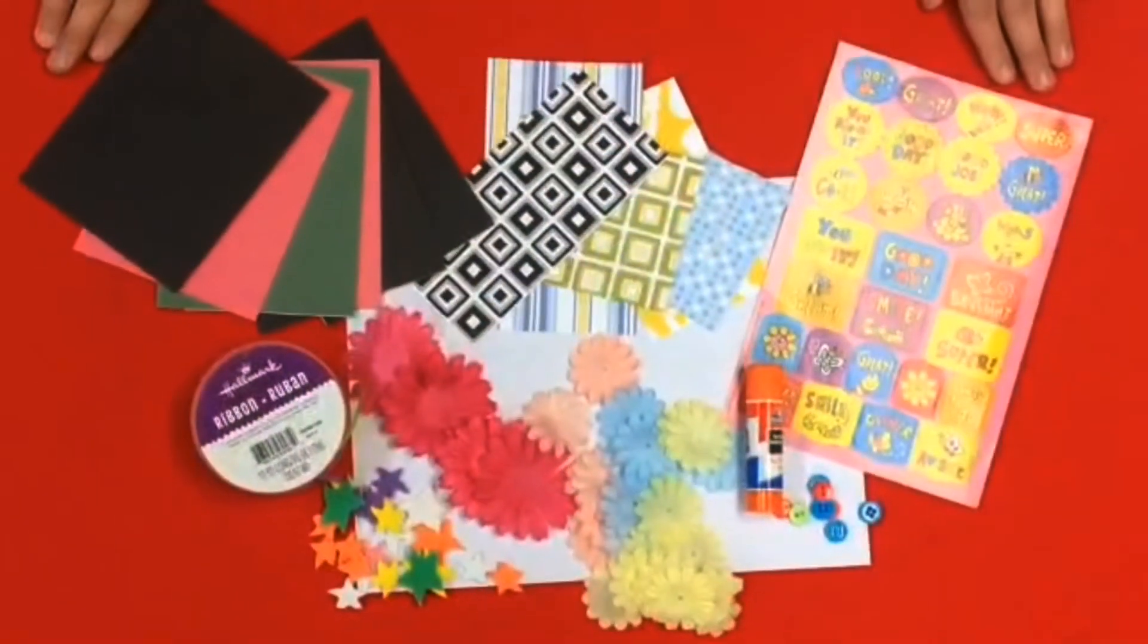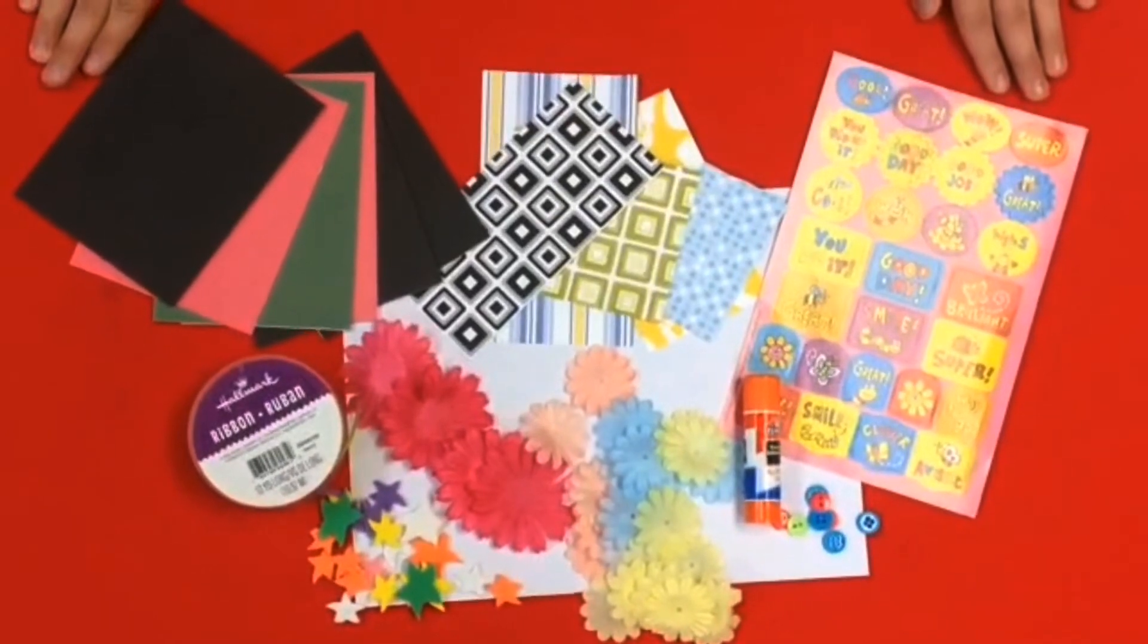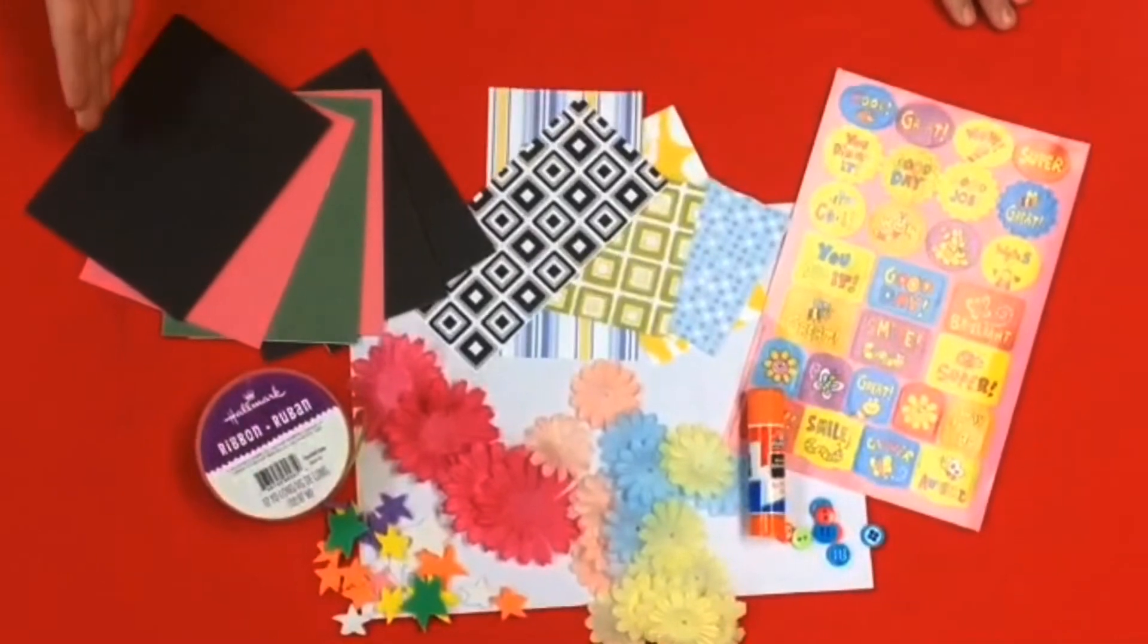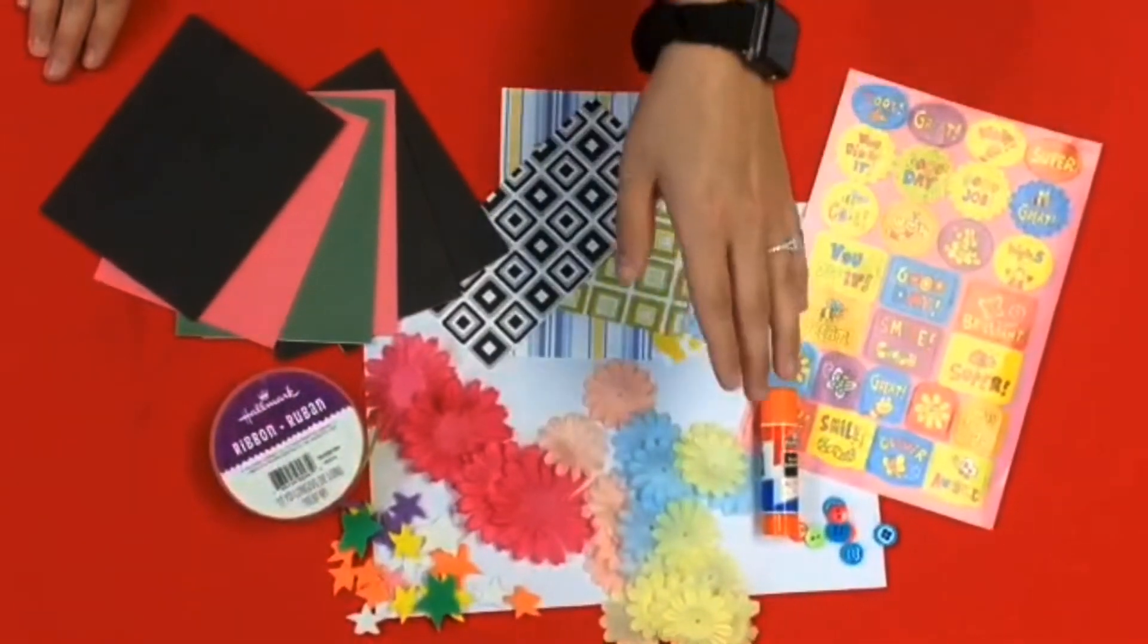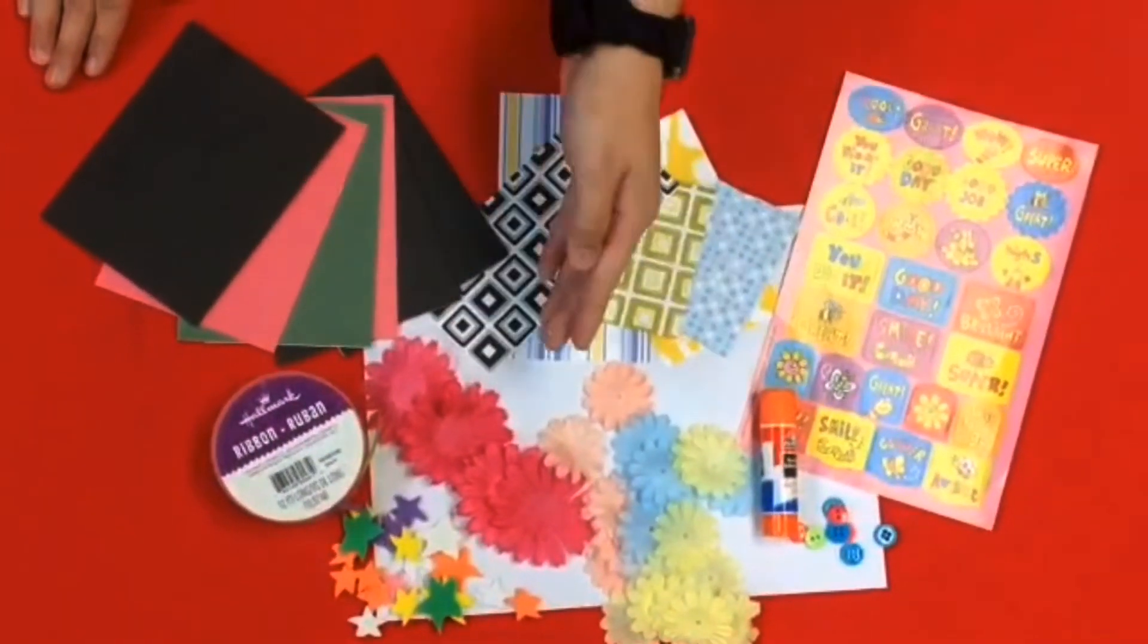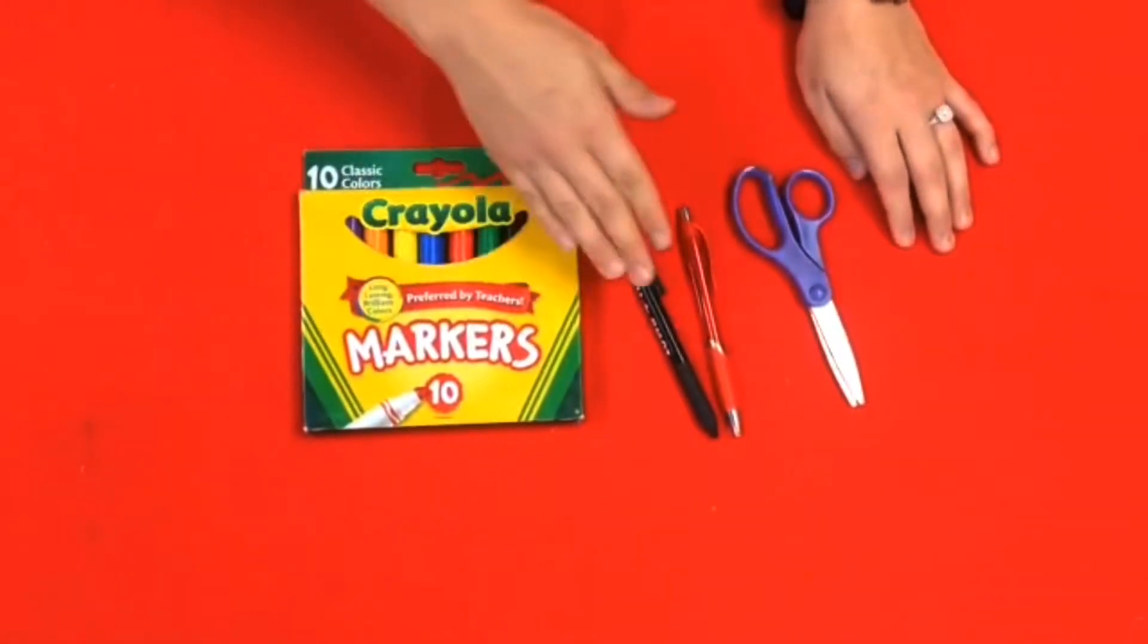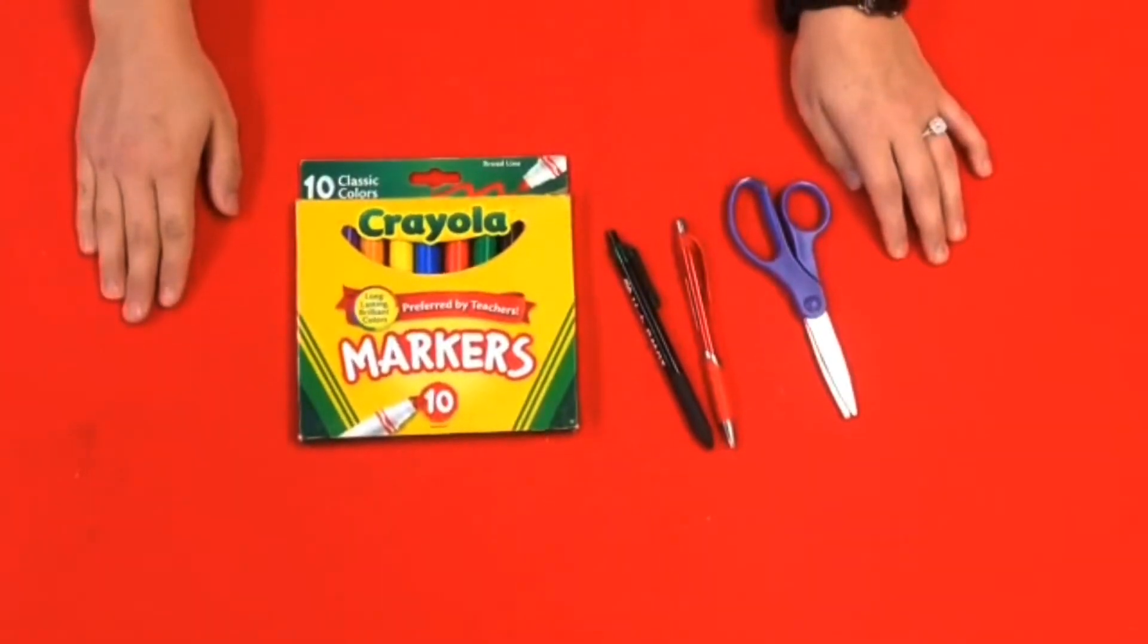For our second activity, we will be exploring paper art basics. In your clover crate, you will find the following items: stickers, scrap of paper, a blank card, buttons, glue, various amount of flowers, stars, ribbon, and scratch piece of paper. The supplies you will need from home will be markers, pens, scissors, and any other materials that you can think of.